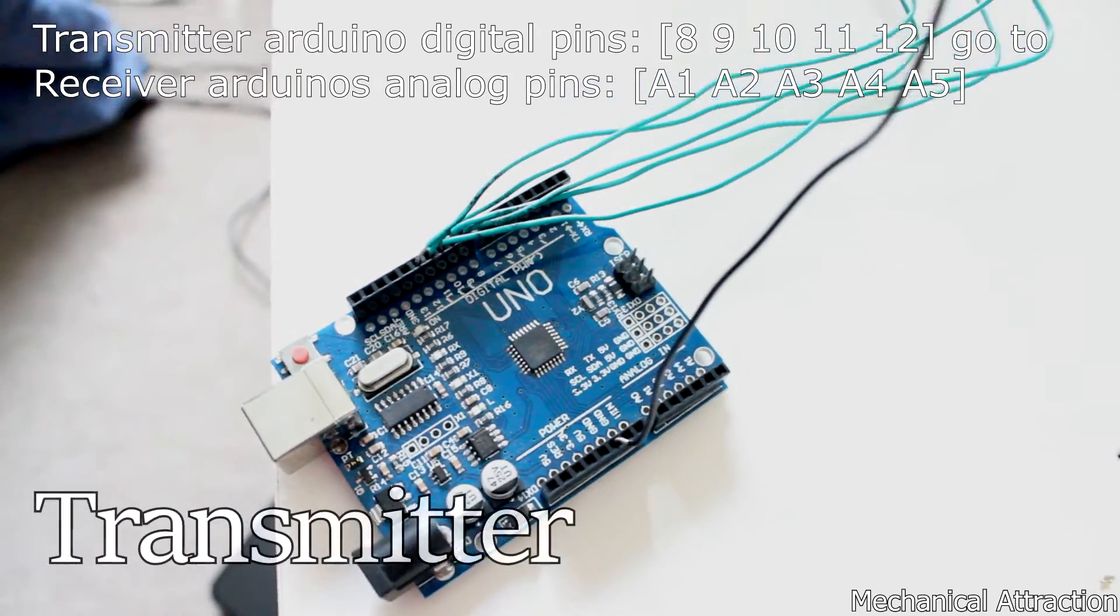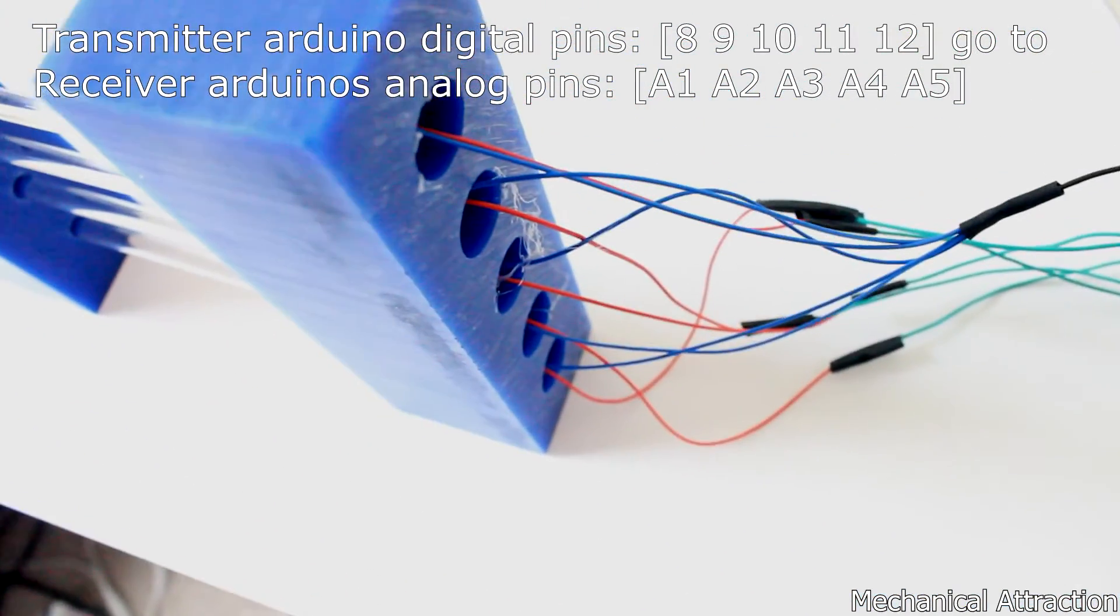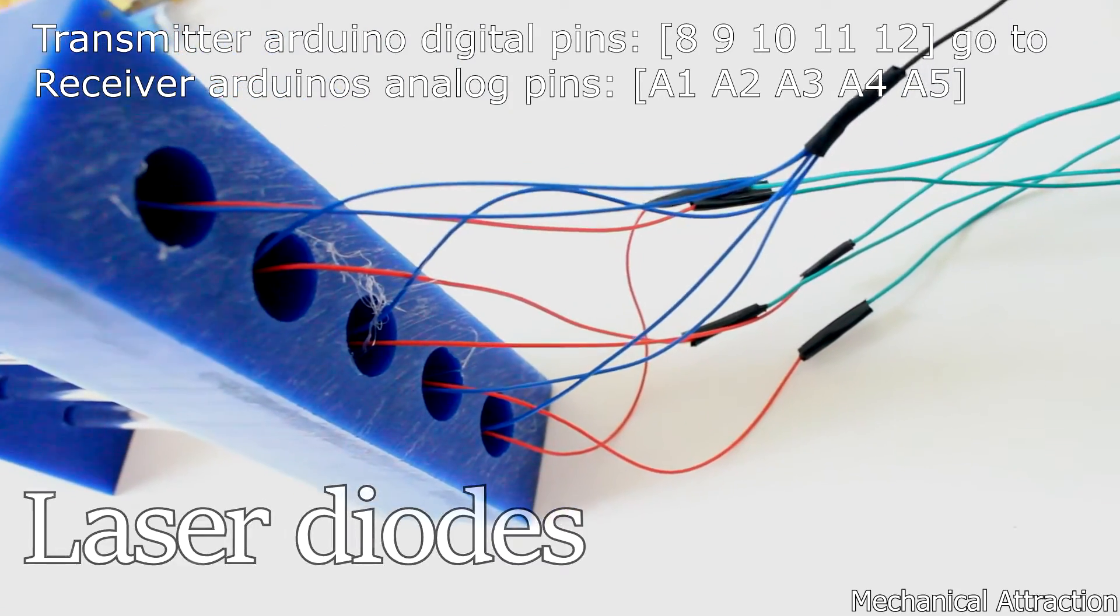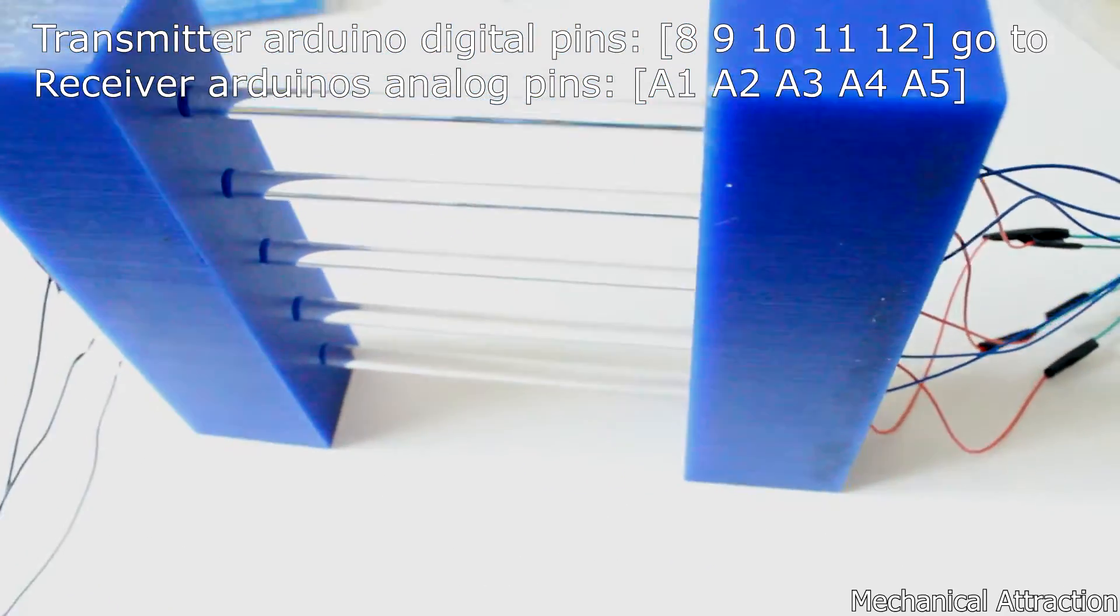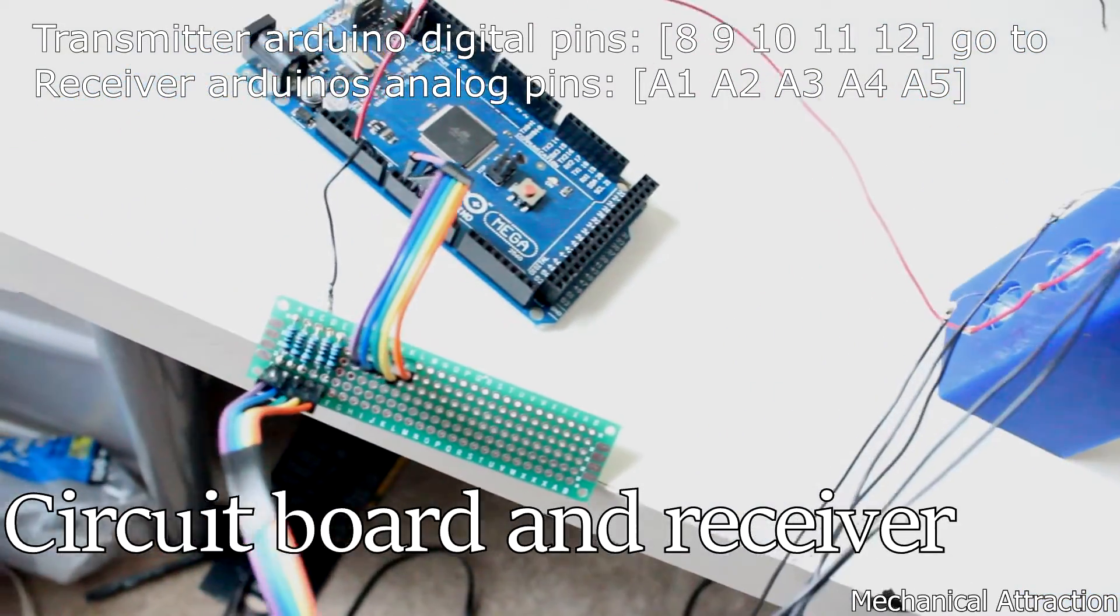To wire these things up, you need to make the 8, 9, 10, 11, 12 of the transmitting Arduino run to the A1, A2, A3, A4, and A5 of the receiving Arduino's pins.